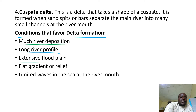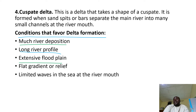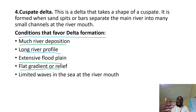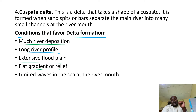Then we have an extensive flood plain — the low land neighboring the main river where deposits will be deposited. If the flood plain is narrow and small, the delta will not mature; it will not be extensive. Then we have a gentle gradient. For deposits to be laid down and remain in one place to form a delta, the area should not be steep. The gradient or relief where the delta forms must be flat for easy deposition.